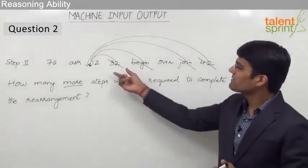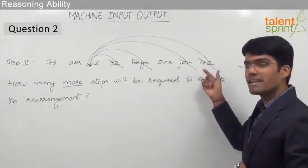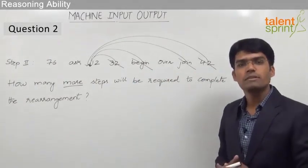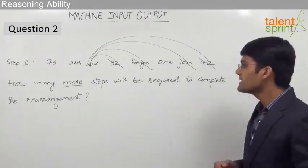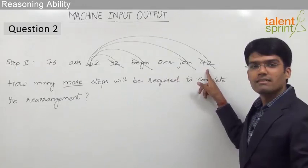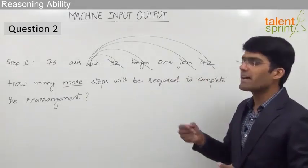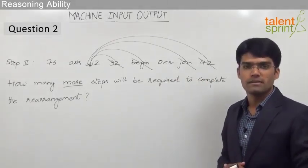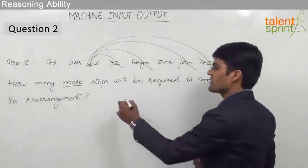By counting the number of numbers and words which have been striked off, we can find out how many more steps are required. And as we can see here, we have striked off 4 elements. Therefore, 4 more steps are required to finish the arrangement. So our answer here is 4.